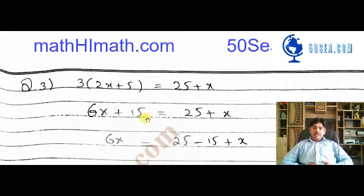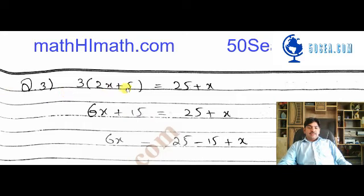Let's start with question number 3 of exercise number 4.1. The statement of this question is 3 into 2x plus 5 is equal to 25 plus x.